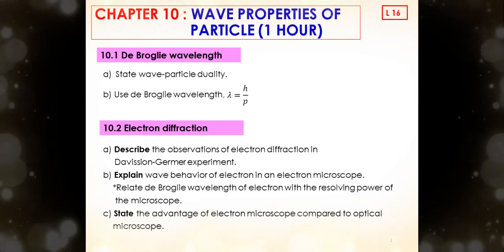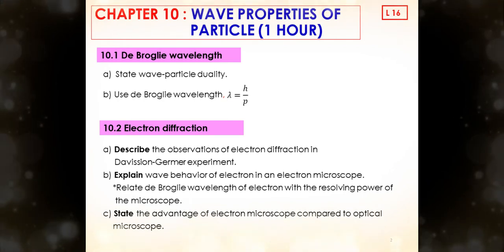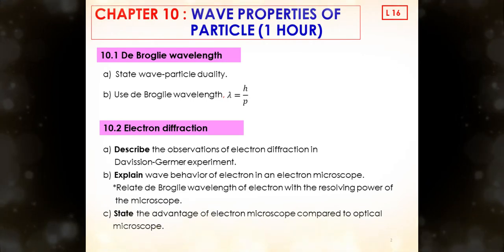However, the usage for this equation will be discussed in tutorial classes. The next subtopic describes the observations of electron diffraction in the Davisson-Germer experiment, then explains wave behavior of electron in an electron microscope. Here we relate de Broglie Wavelength of electron with the resolving power of the microscope. Finally, we state the advantage of electron microscope compared to optical microscope.